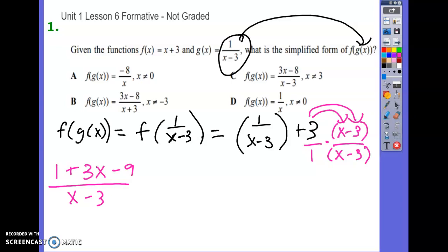Now, I think the only thing left to do is to add this minus nine and this plus one. So that equals three x minus eight over x minus three.